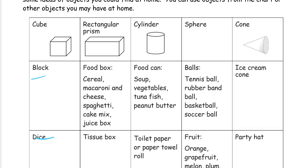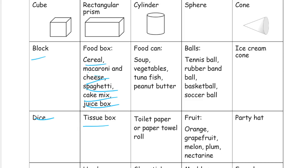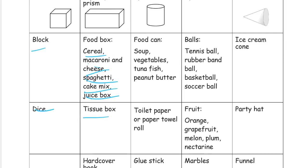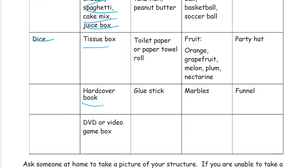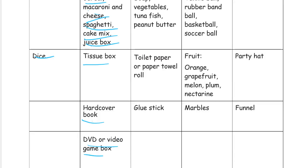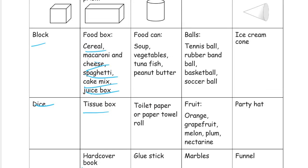For rectangular prisms you can use a cereal box, macaroni and cheese box, a box of spaghetti, a box of cake mix, a juice box, a tissue box — these are mostly boxes. A hardcover book might be a good one, and a DVD, video game box, or CD box — that's one I use.